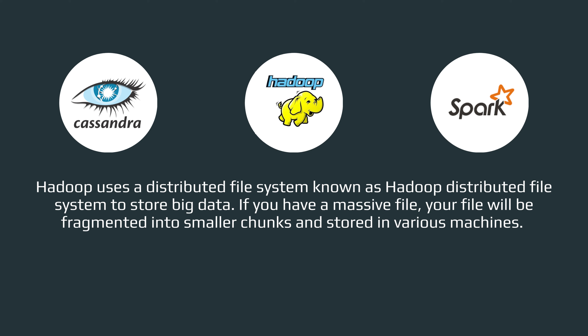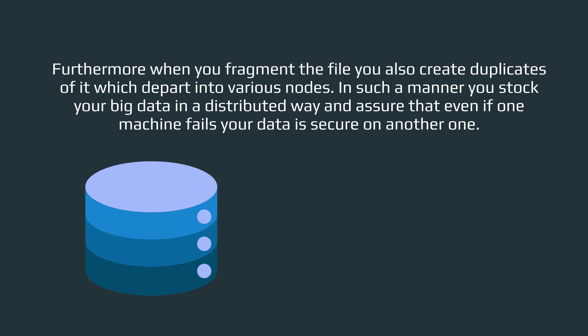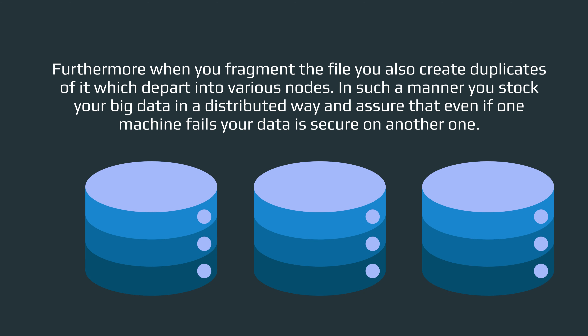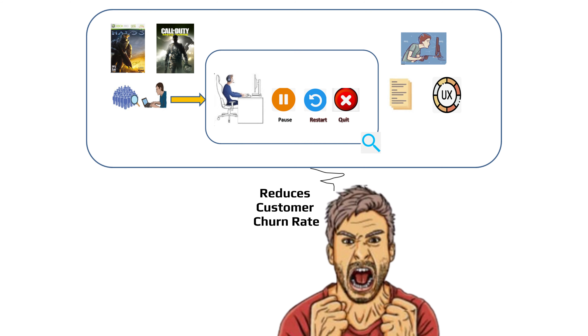If you have a massive file, it will be broken down into smaller chunks and stored across various machines. Furthermore, when you fragment the file, you also create duplicates of it, which are distributed into various nodes. In this way, you store your big data in a distributed manner and ensure that even if one machine fails, your data is secure on another one.